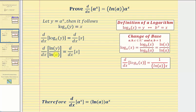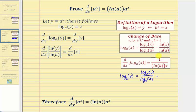Looking at the change of base formula more closely: if we have log base a of y, we can write this as a quotient of two logarithms with any base. If we select base e, we have log base e of y divided by log base e of a. Since log base e is natural log, we have natural log y divided by natural log a. Notice that natural log a is just a constant.